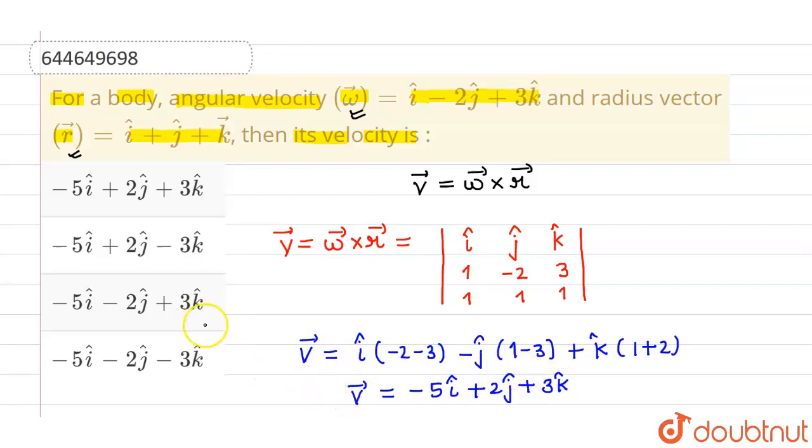Now if you match with the options, this is minus 5 i cap plus 2 j cap plus 3 k cap. So option 1 is correct and rest all options are incorrect. I hope you understood. Thank you.